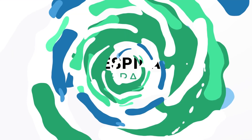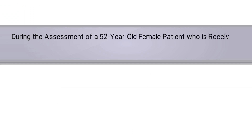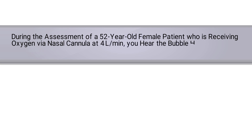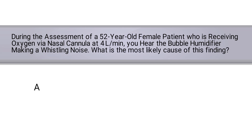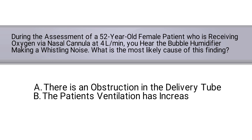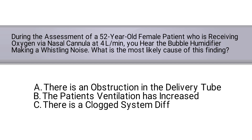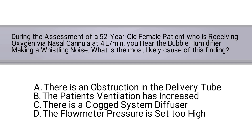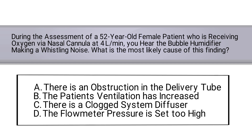During the assessment of a 52-year-old female patient who is receiving oxygen via nasal cannula at four liters per minute, you hear the bubble humidifier making a whistling noise. What is the most likely cause of this finding? A) There is an obstruction in the delivery tube. B) The patient's ventilation has increased. C) There is a clogged system diffuser. Or D) The flow meter pressure is set too high.